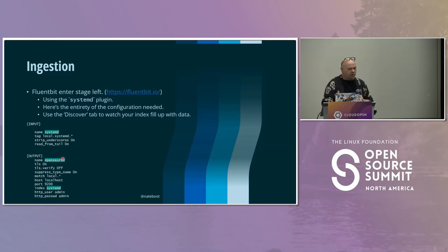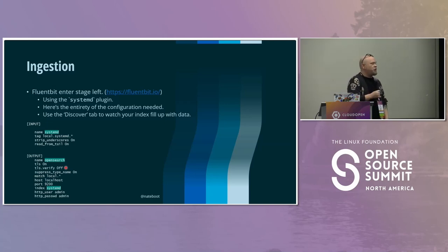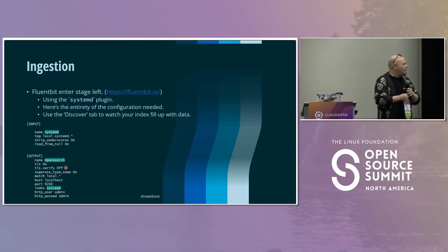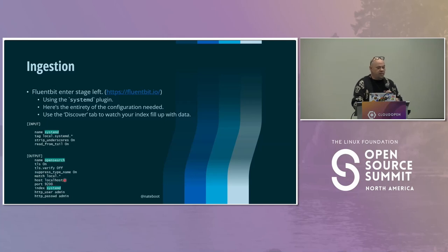In the output portion, we'll be sending SystemD logs into OpenSearch. We turn on TLS and turn off TLS Verify — OpenSearch is secure out of the box, but only with self-signed certificates, which aren't offered by a major certificate vendor, so we can't verify them. We stopped using type names a few versions ago, so I also suppress the type name. OpenSearch was running on localhost in a Docker image, and the ingest port is 9200. I beg your forgiveness that I've hard-coded admin and admin in my configuration.